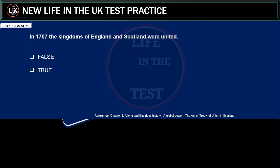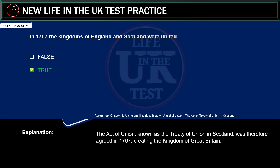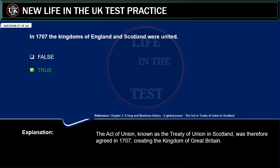Is the statement below true or false? In 1707, the kingdoms of England and Scotland were united. Correct answer: true. Explanation: the Act of Union, known as the Treaty of Union in Scotland, was therefore agreed in 1707, creating the Kingdom of Great Britain.